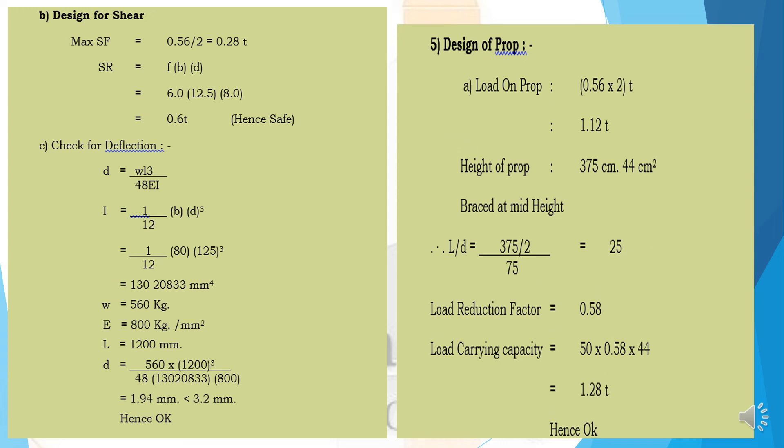Design for prop: load on prop = 0.56 × 2 = 1.12 ton. Height of the prop = 375 cm, with cross-section 44 cm². Braced at mid-height. Slenderness ratio = (375/2) / 7.5 = 25. Load reduction factor = 0.58. Load carrying capacity = 50 × 0.58 × 44 = 1.28 tons. Hence, it is okay.